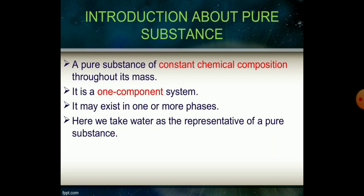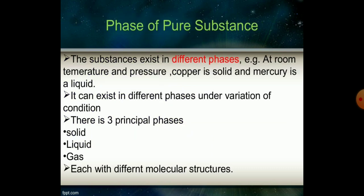What is a pure substance? A pure substance of constant chemical composition throughout its mass is called a pure substance. It is a one component system that may exist in one or more phases. Here we take water as the representative of pure substance.